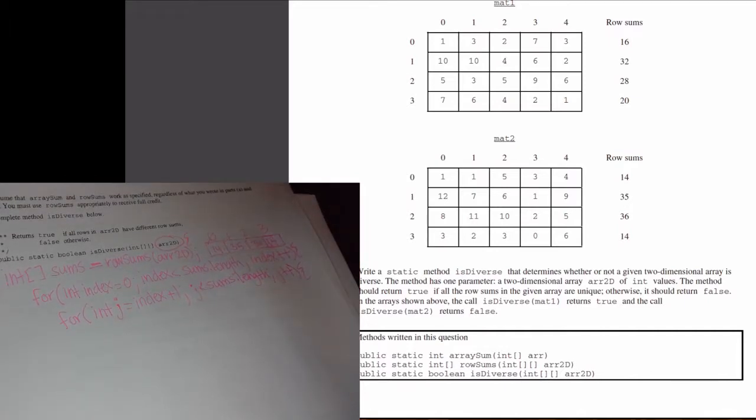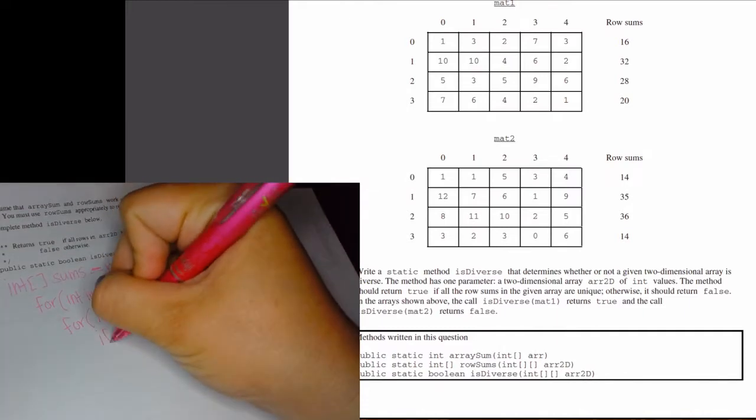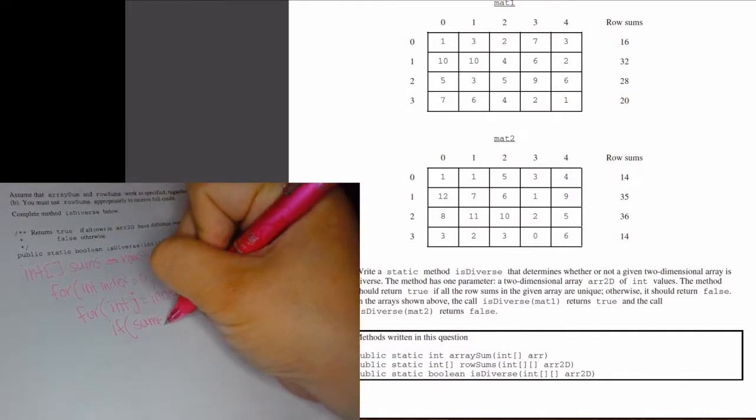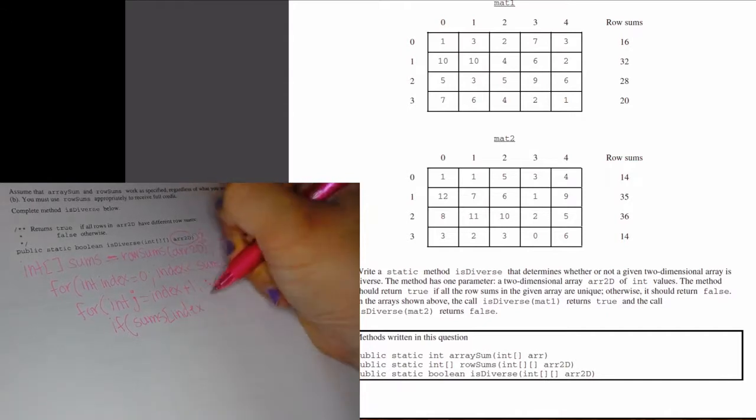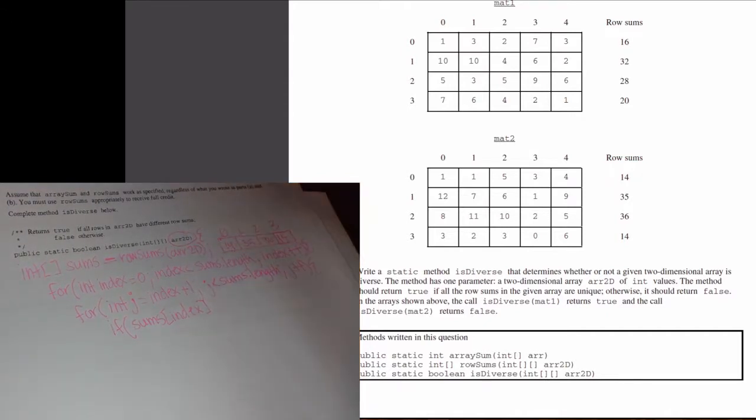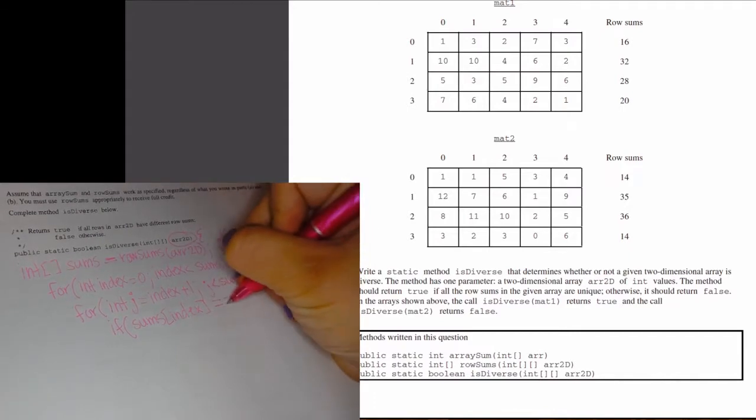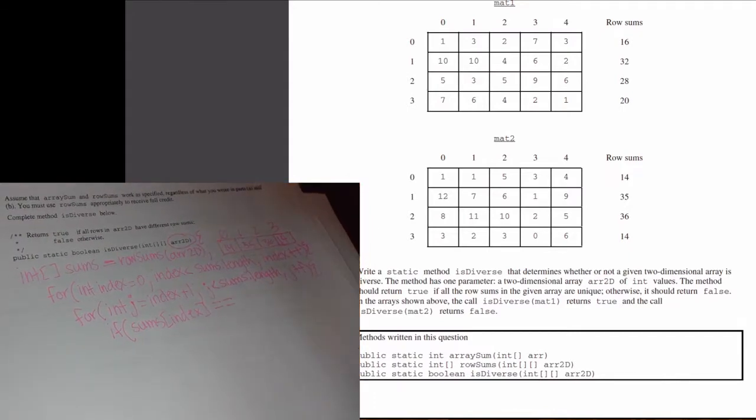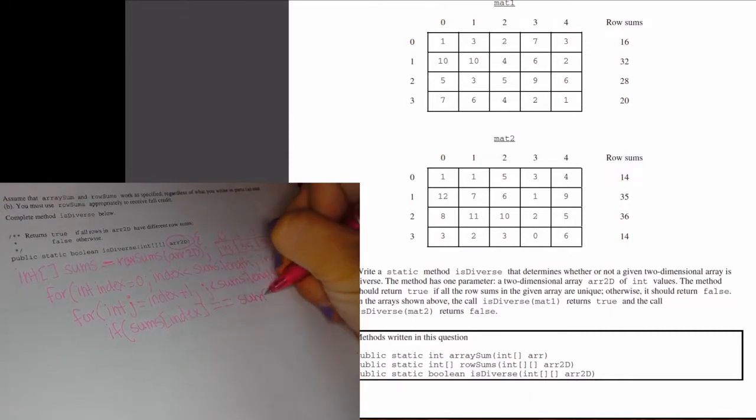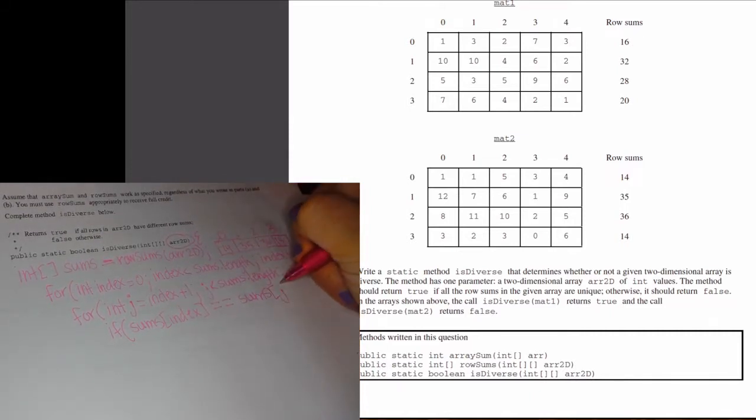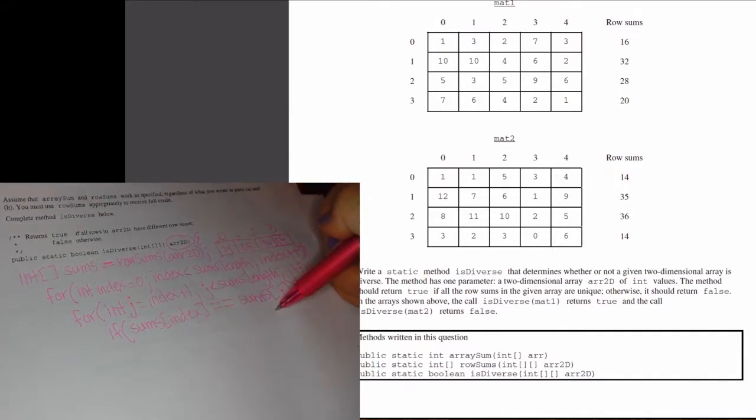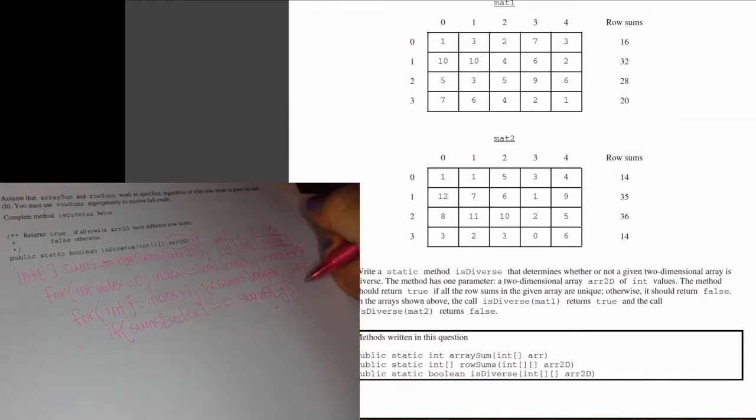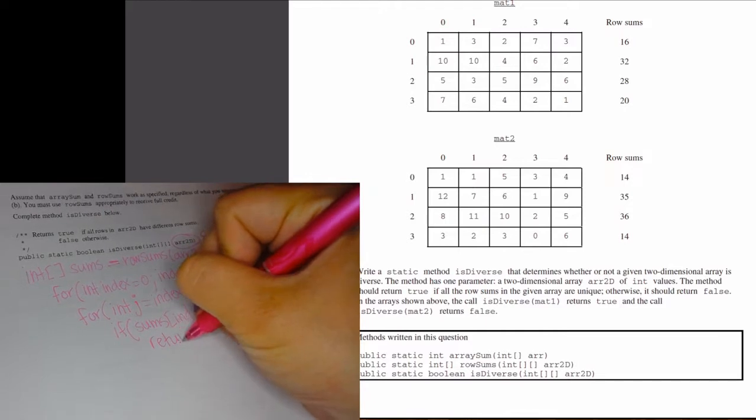Okay, now I want to make a comparison. I want to see if sums[index] is the same as sums[j]. Because what's being stored in sums are integers, I want to use my double equals comparison operator, not dot equals. If they are equal, we know that this is not a diverse array, so we want to return false. It's not diverse.